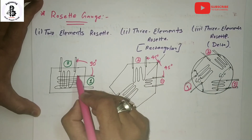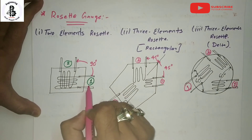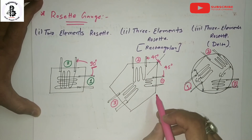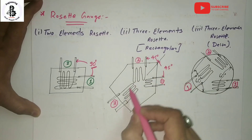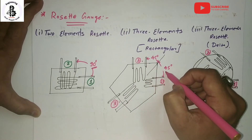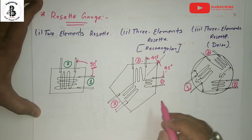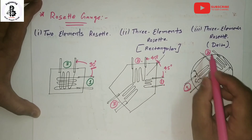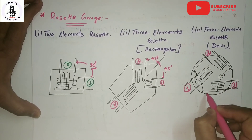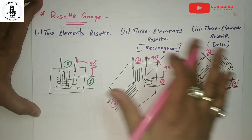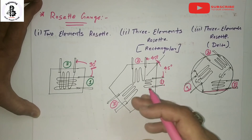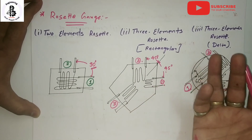There are three types of Rosette: rectangular, delta, and two-element Rosette. The two-element Rosette has two terminals at 90 degrees to each other. For the three-element rectangular type, the gauges are at 45 and 45 degrees. For the delta type, all three elements are at 60 degrees with respect to the reference plane. These configurations allow multi-directional strain measurement.